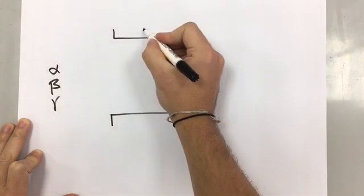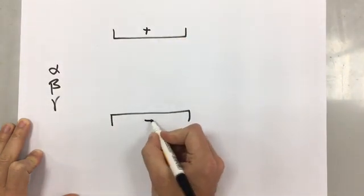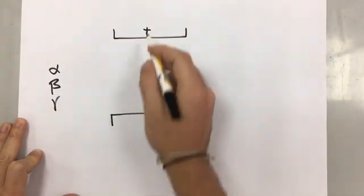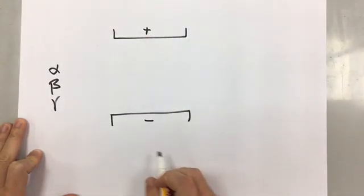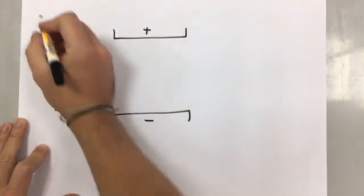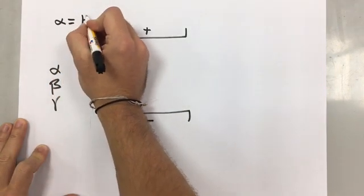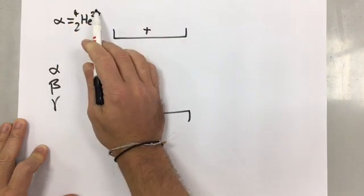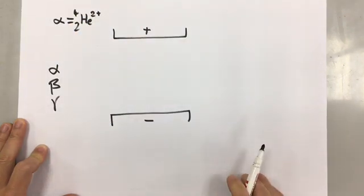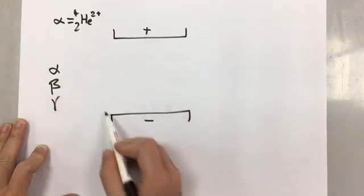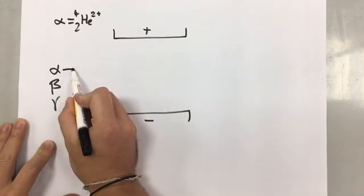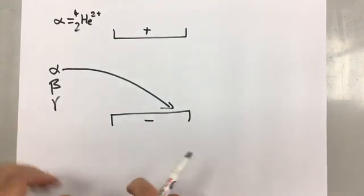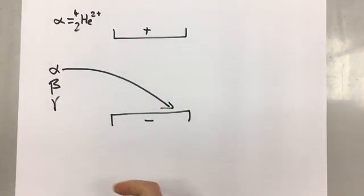So with an electric field, let's imagine that we have a positive electrode here and a negative electrode here. You have an electric field between them. The alpha particle, we know that an alpha particle is a helium nucleus, so it has a 2+ charge. So if the alpha particle is fired into this electric field, the alpha particle is going to go towards the negative side because opposite charges attract.